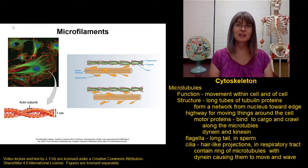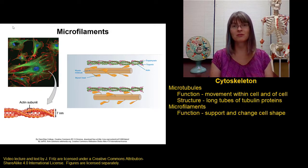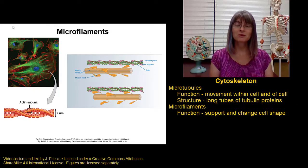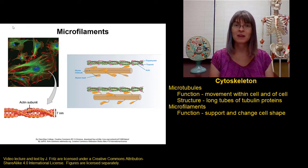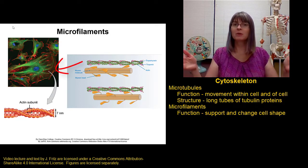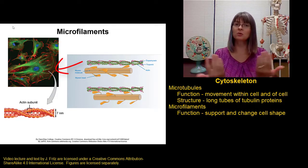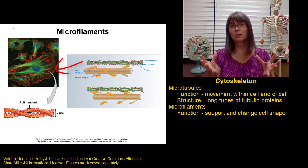The second type of cytoskeletal filaments are the microfilaments. The importance of the microfilaments is helping to provide structure and shape to the cell. We tend to find these microfilaments in a network throughout the cell, but especially concentrated under the plasma membrane, where they help support the shape.